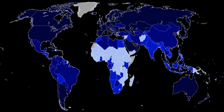2.1 Mean Years of Schooling Index (MYSI) = MYS / 15, where 15 is the projected maximum of this indicator for 2025. 2.2 Expected Years of Schooling Index (EYSI) = EYS / 18, where 18 is equivalent to achieving a master's degree in most countries. 3. Income Index = (ln(GNIpc) − ln(100)) / (ln(75,000) − ln(100)).